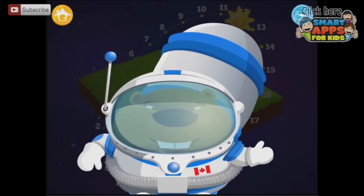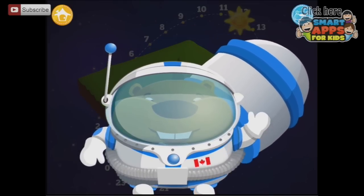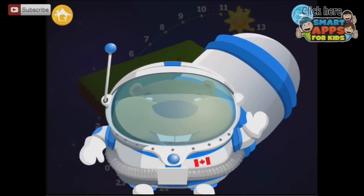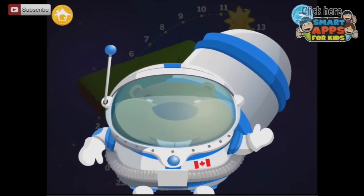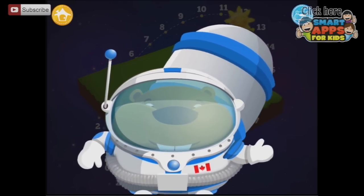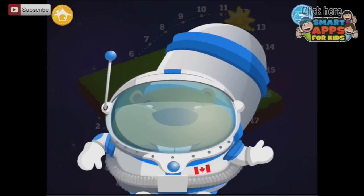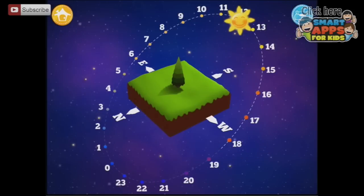You have seen that the Earth is spinning. When it rotates fully, one day has gone by. This time period is divided into 24 parts. We call them hours. Let's play a game to understand this better. Put the sun on 14. Okay, put the sun on 14. There it is.